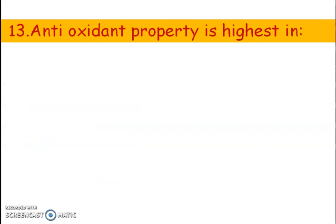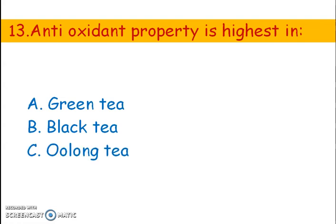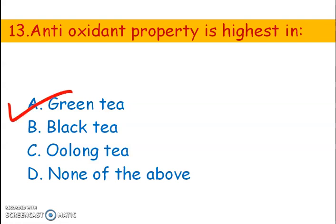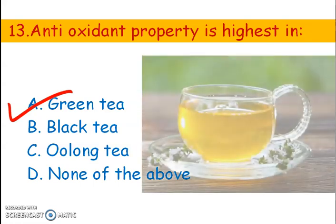Next question. Anti-oxidant property is highest in which tea? Options: A) Green tea, B) Black tea, C) Oolong tea, D) None of the above. The right answer is option A, green tea. Green tea is very popular because of its health benefits. Anti-oxidants are substances that prevent oxidation — they protect our cells from damage by free radicals. That's why green tea is very much beneficial for health.